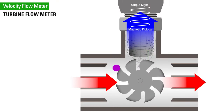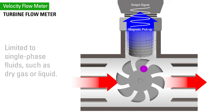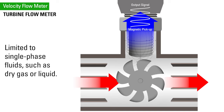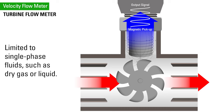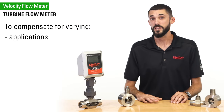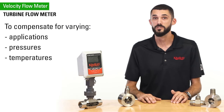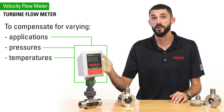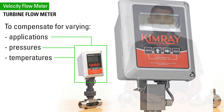Because of the moving parts and the operation, turbine meters are limited to single-phase fluids such as dry gas or liquids. To compensate for the varying applications, pressures, and temperatures, those variables must be accounted for in the flow monitor to calculate an accurate measurement.